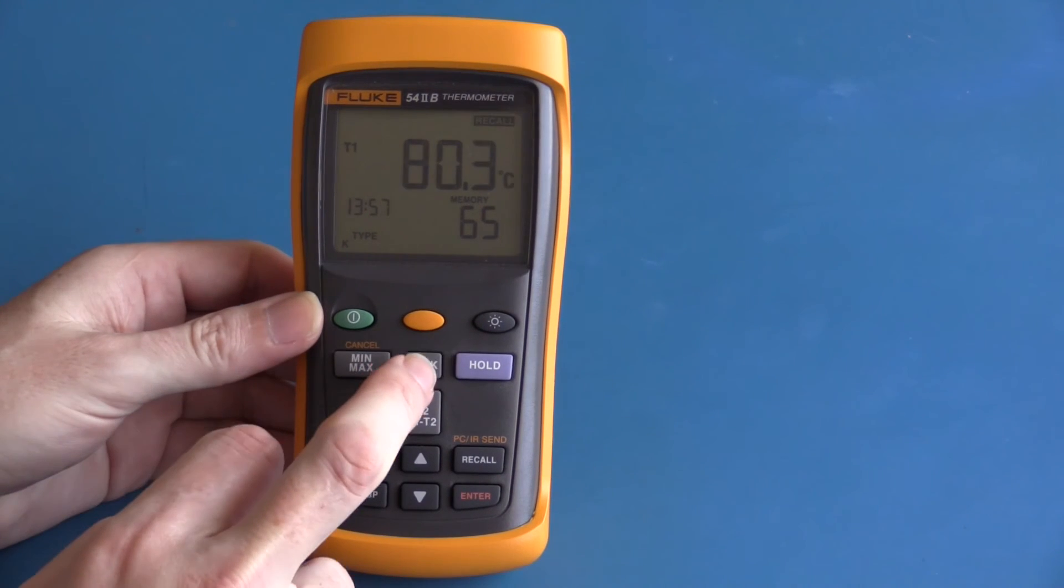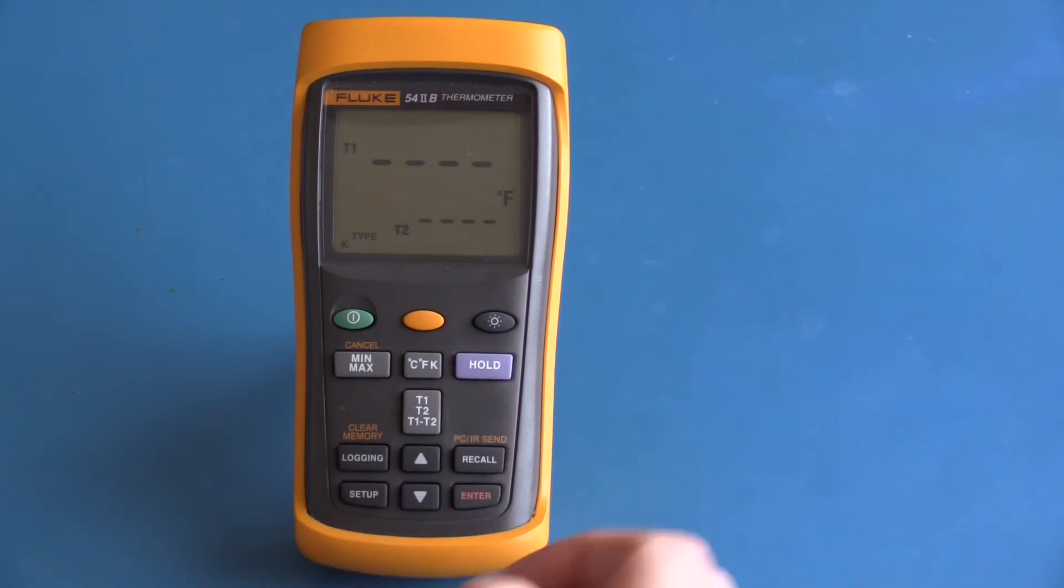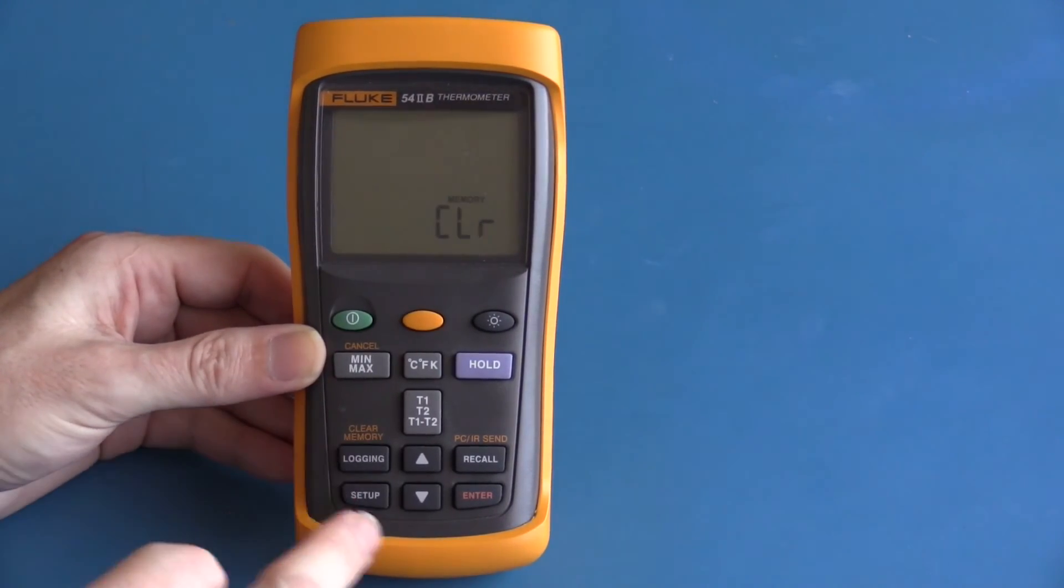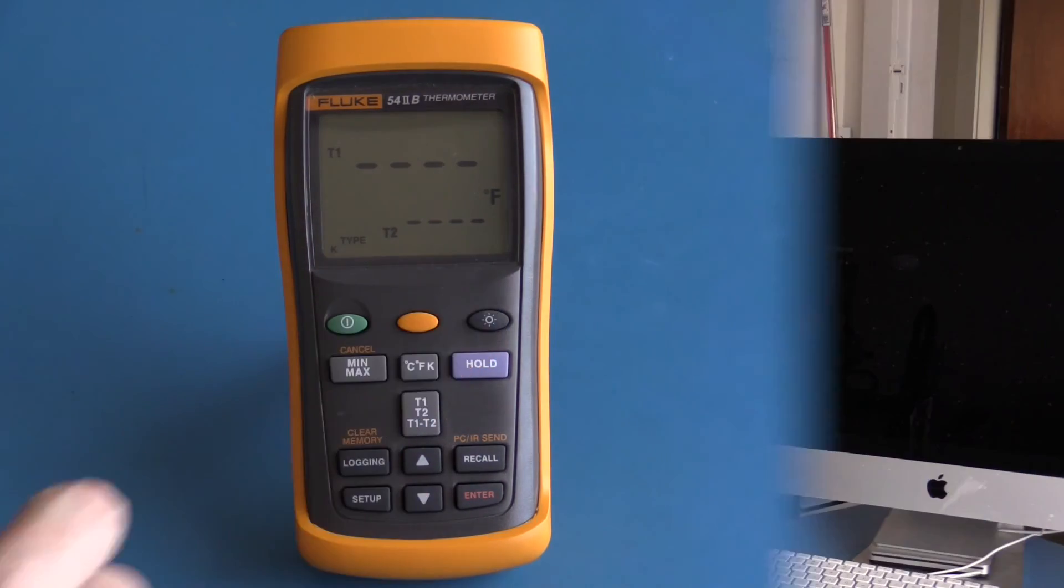To exit we just press recall again. The memory can be cleared by pressing the second function log and enter. In a dark location this unit also has a backlight function. In summary, I really enjoy using this thermometer. I particularly enjoy having the large display and also the long periods of time that this can log for unattended. The accuracy of this unit is actually quite good. It's spec'd at 0.05 percent. The thermal couples however may have an accuracy of only one or two percent, so bear that in mind. There's not really much more to say about this unit. It's a good robust unit.